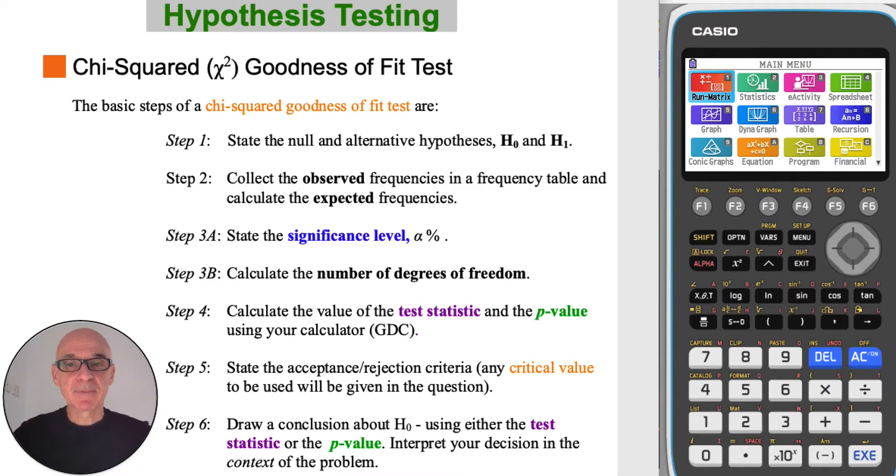The basic steps of a chi-squared goodness of fit test are: Step 1, state the null and alternative hypotheses. Step 2, calculate the expected frequencies. Step 3, state the significance level and calculate the number of degrees of freedom. Step 4, calculate the value of the test statistic and the p-value. Step 5, state the acceptance and rejection criteria. And Step 6, draw a conclusion either using the test statistic or the p-value.